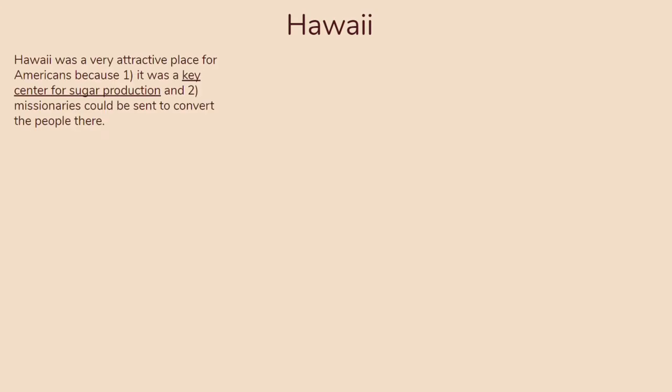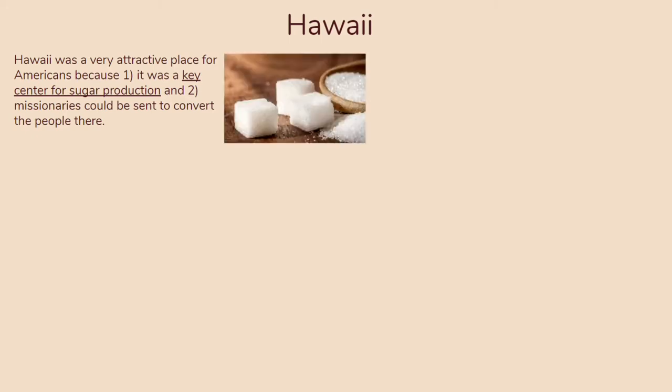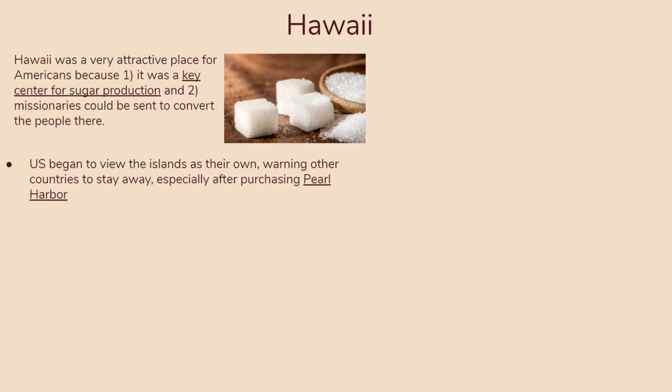Moving on, let's talk about Hawaii — really where we see the first implementation of American imperialism. The key reasons America wants to conquer Hawaii: first, it was a key center for sugar production, a very profitable cash crop. Second, Christian missionaries could be sent to convert the people there. There is both an economic factor and a racist, almost white supremacist sentiment underlying it. After the purchase of Pearl Harbor, the US began to view all of the islands as their own.